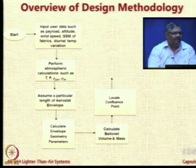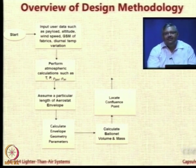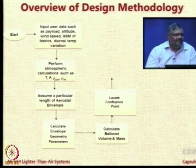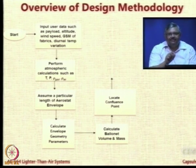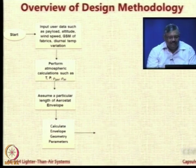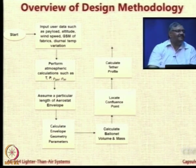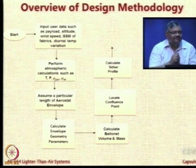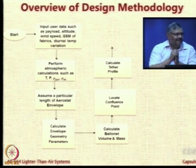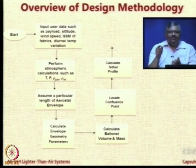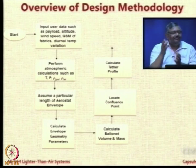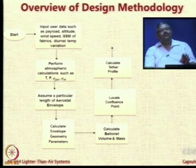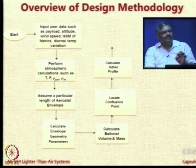Next, you locate the confluence point. You can say it is equal to one diameter from the nose and one diameter below the starting point — this is not the end point, it is a start point. Once you do that, you know the confluence point location — the likely position, the desirable position, or I should say the first estimate. You also know the operating height, the geometry, and hence the aerodynamics of the envelope. So you can do the profile calculation, which I will demonstrate after some time. With this you will come to know the actual length of tether needed under the operating condition.